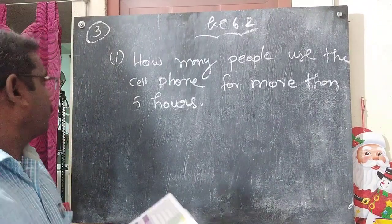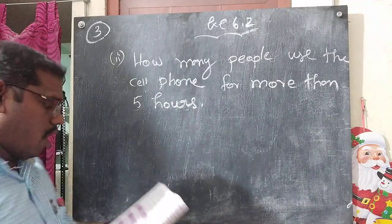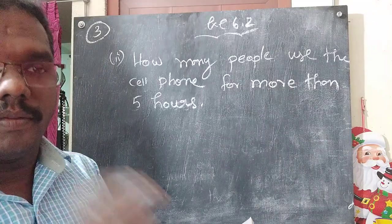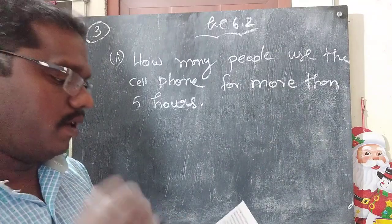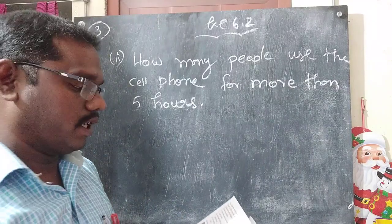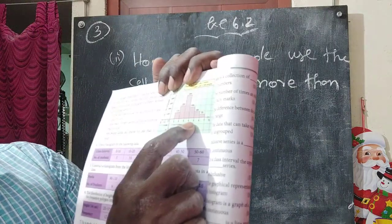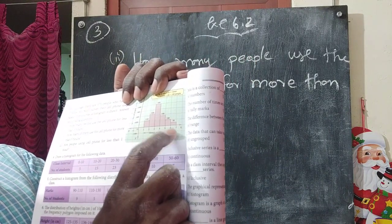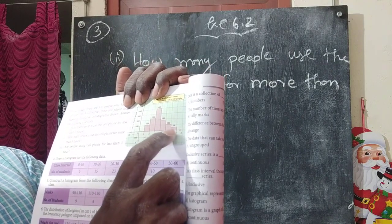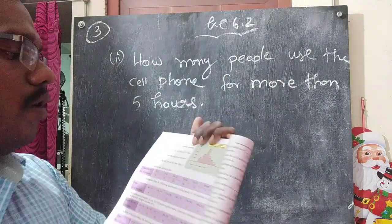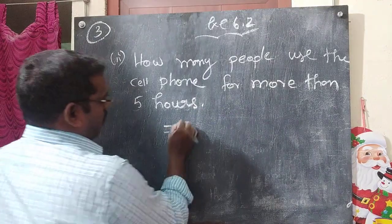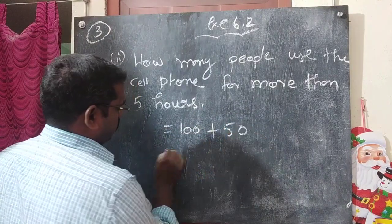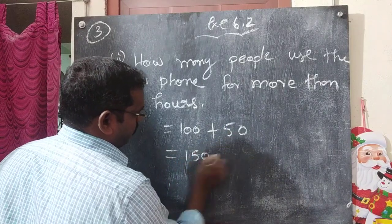Question number 2: how many of them use the cell phone for more than 5 hours? Look at the graph — 5 to 6 hours, how many of them use the cell phone? The total is 150. That is 150 people.